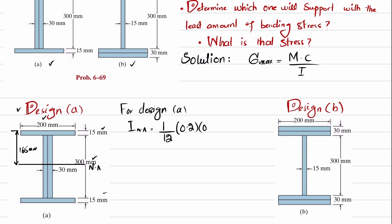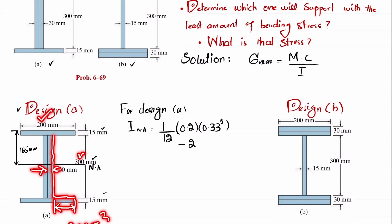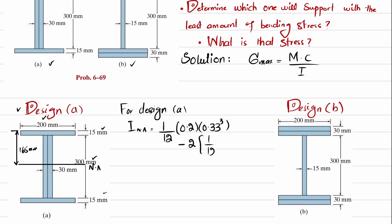We subtract 2 times the moment of inertia of the inner portions. The height of each inner portion is 300 mm (0.3 m) and the width is 200 minus 30 equals 170, divided by 2. So we write: minus 2 × (1/12) × (0.17/2) × (0.3)³. When you solve this, I about the neutral axis for Design A comes out to be 0.2164 × 10⁻³ m⁴.